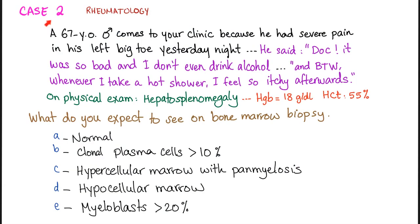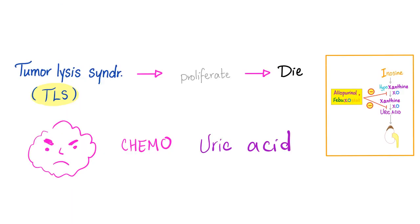Here is case number two for you. The previous case is in my rheumatology playlist. Please read it, pause, and let me know the answer in the comment section. So now I understand why we use allopurinol in gout and why we use it in myeloproliferative neoplasms.